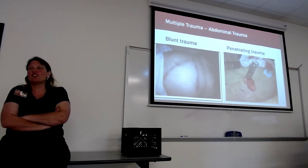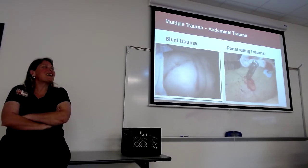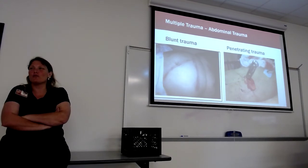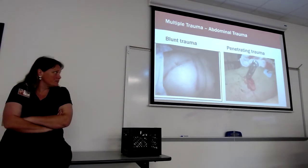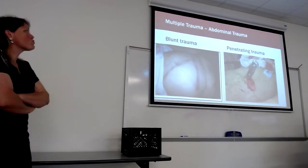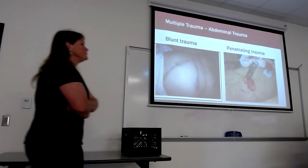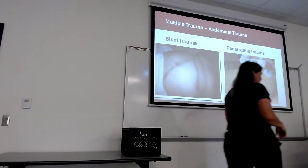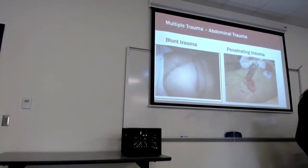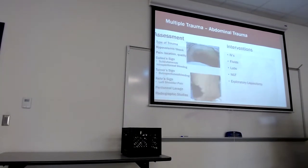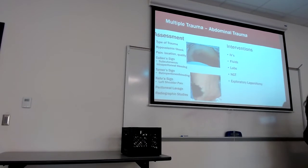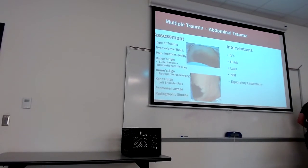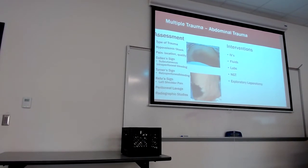If there's a knife or other object sticking out of the abdomen, what do we do? We stabilize it and dress around it — we do not remove it. We keep it until the patient goes to the OR, where it is removed. Never pull the object out in the field or ER.